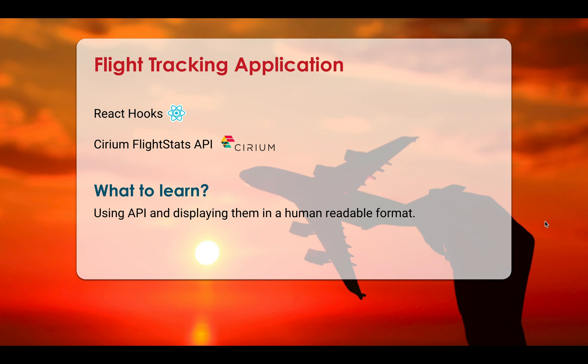We will learn how to consume an API — or how to use and interact with an API — and display it in a human readable format. An API is something that others are already working on, like the Cirium Flight Stats API. They keep updating it, and what we do is send a specific request and get a response back. In another video we'll explain what an API is in a really layman format, but for now we assume you know what an API is.